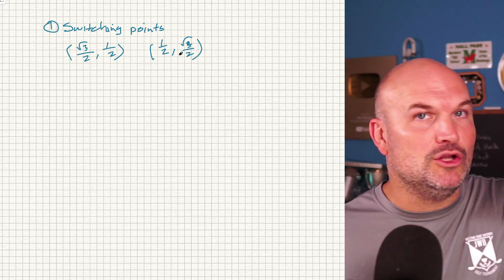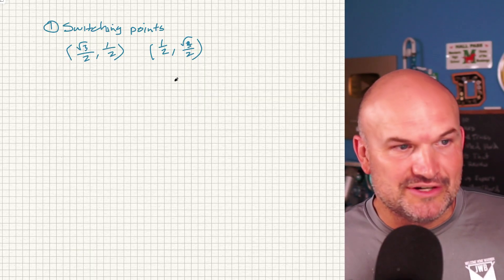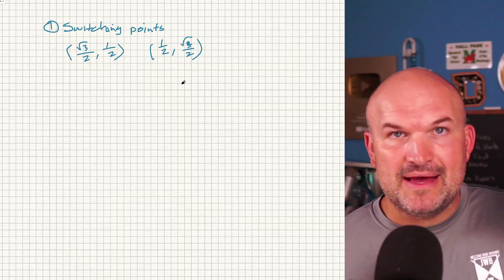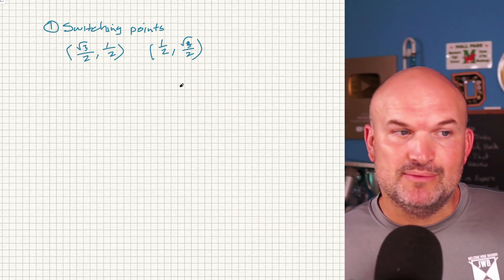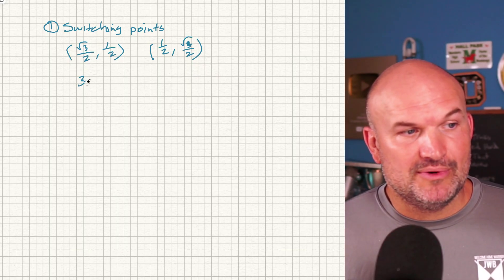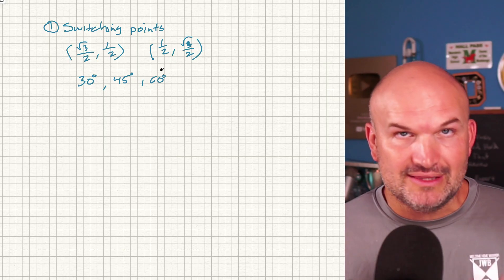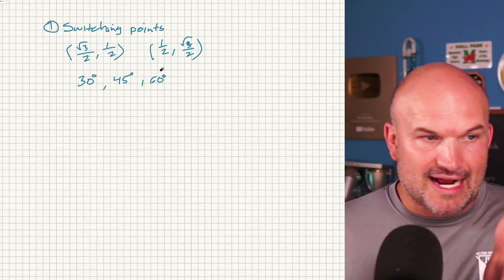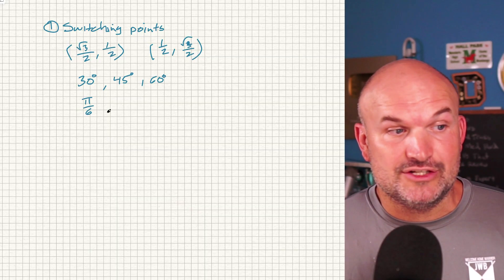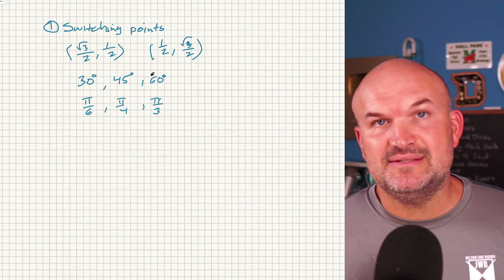These points show up all over the unit circle — yes, with various plus and minus signs — and how many times do we know exactly what the answer is, but then we're taking a test or doing homework and we just have that brain fart and switch up the points? What also happens all the time is students switch up the angles: 30 degrees, 45 degrees, and 60 degrees — or in radians, π/6, π/4, and π/3 — students get these mixed up.